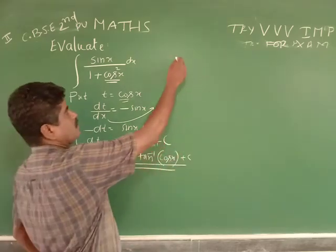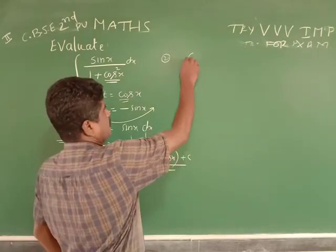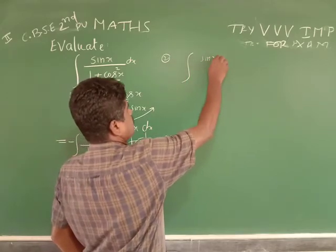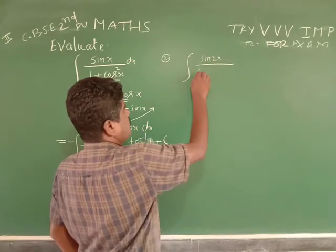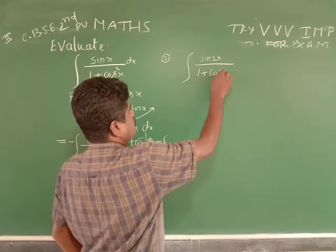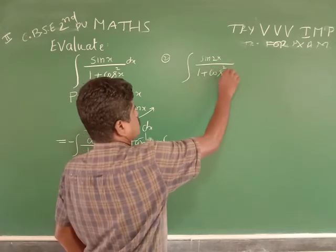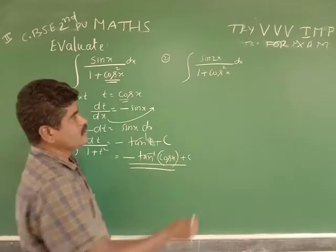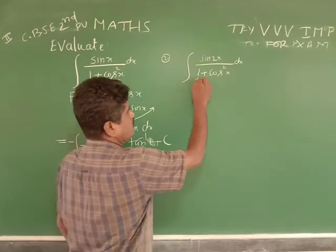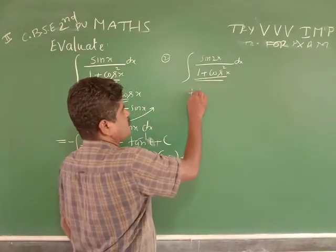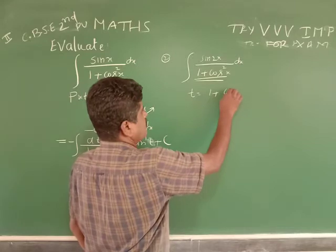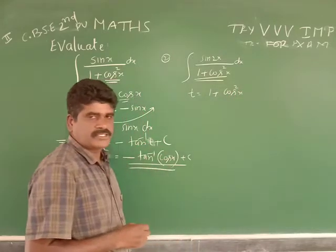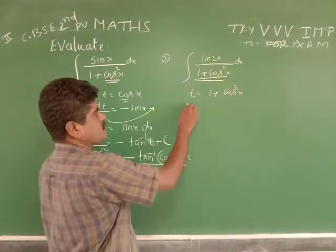Now the second problem: evaluate the integration of sin(2x) divided by 1 plus cos²(x) dx. Put t equal to 1 plus cos²(x). Since t is a function of x, differentiate with respect to x.